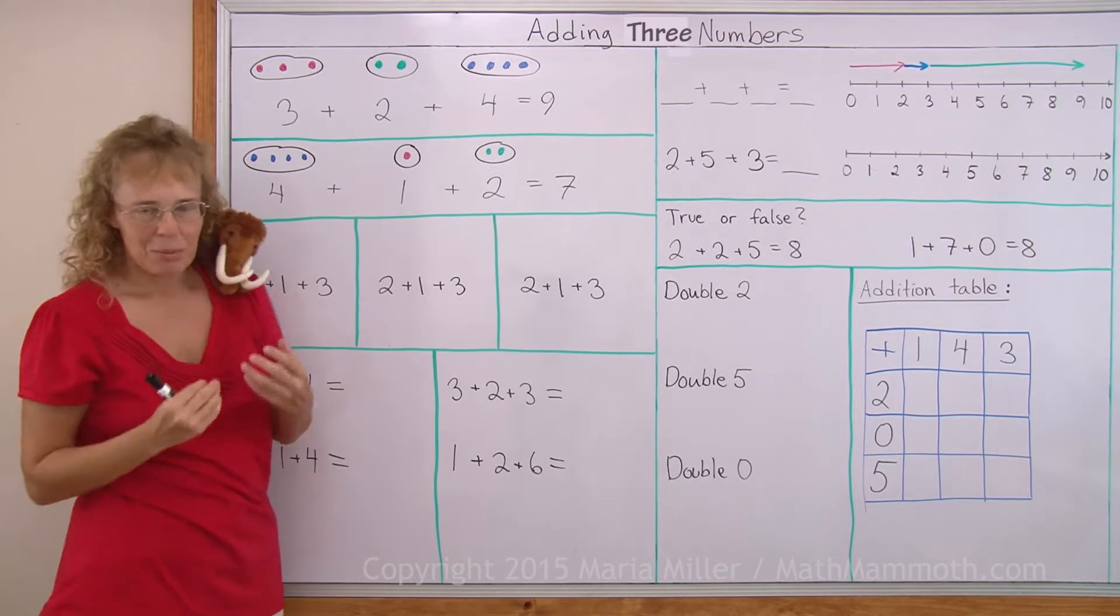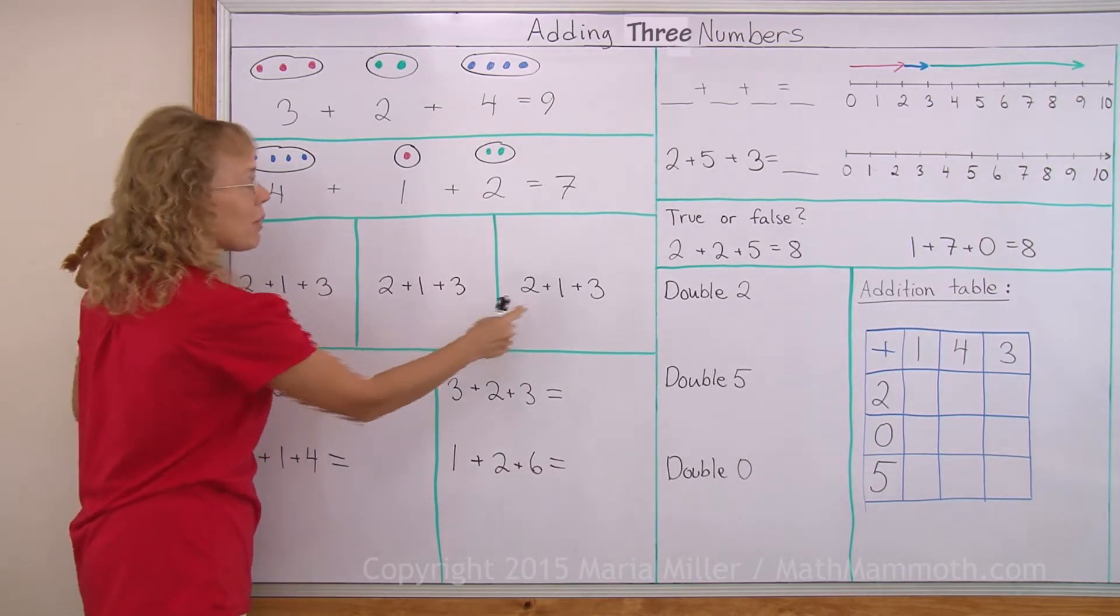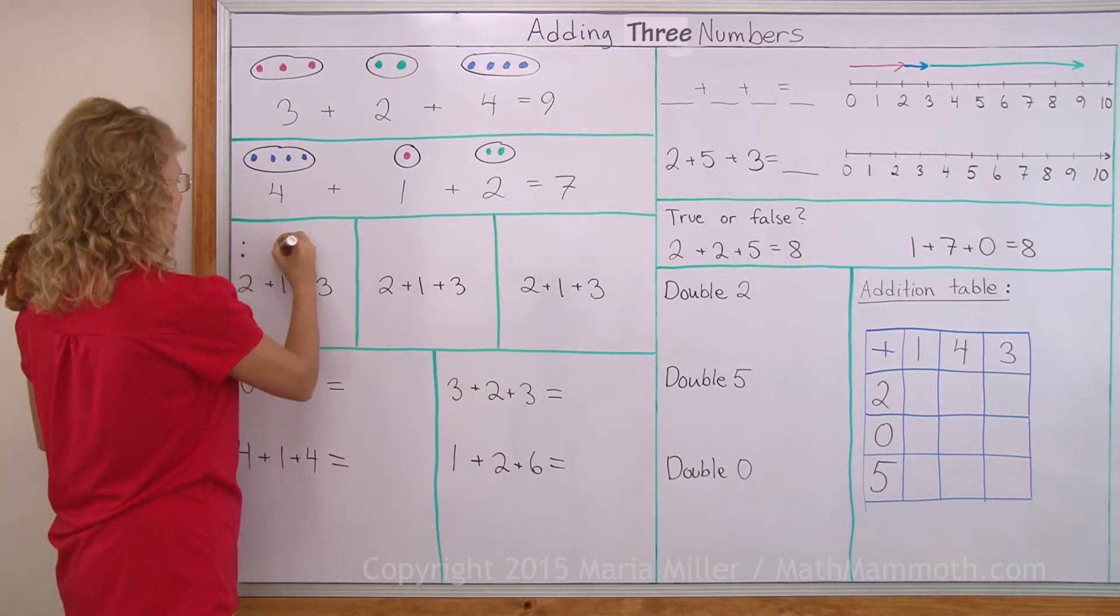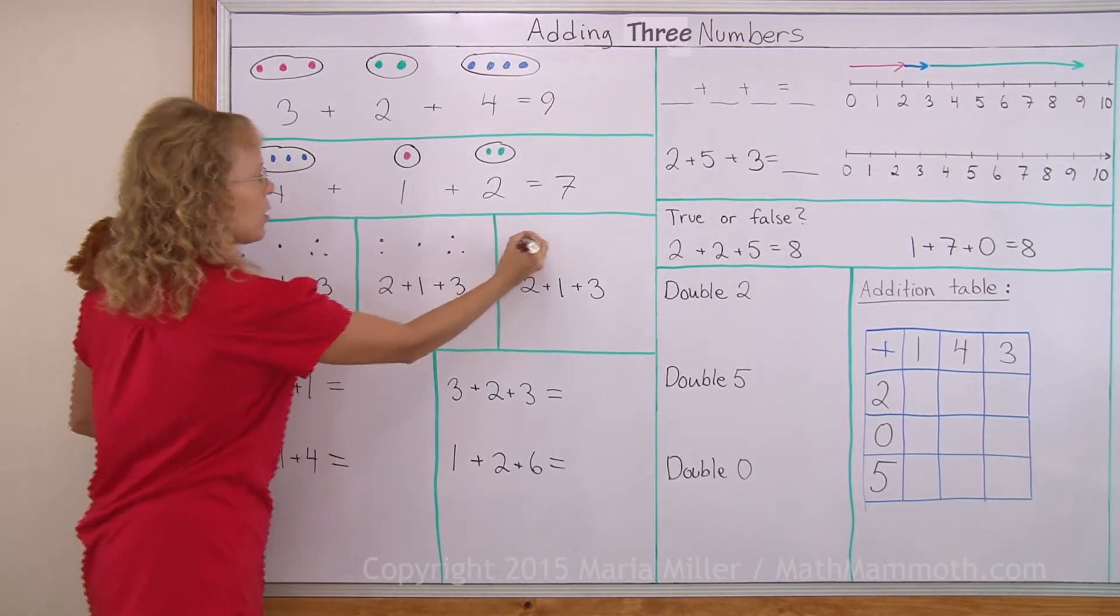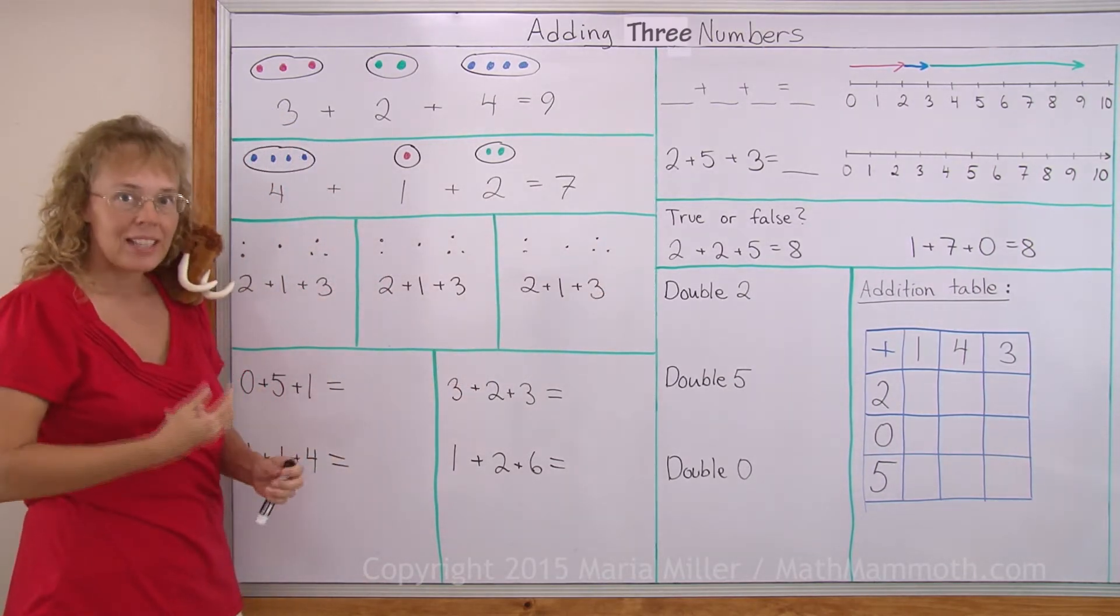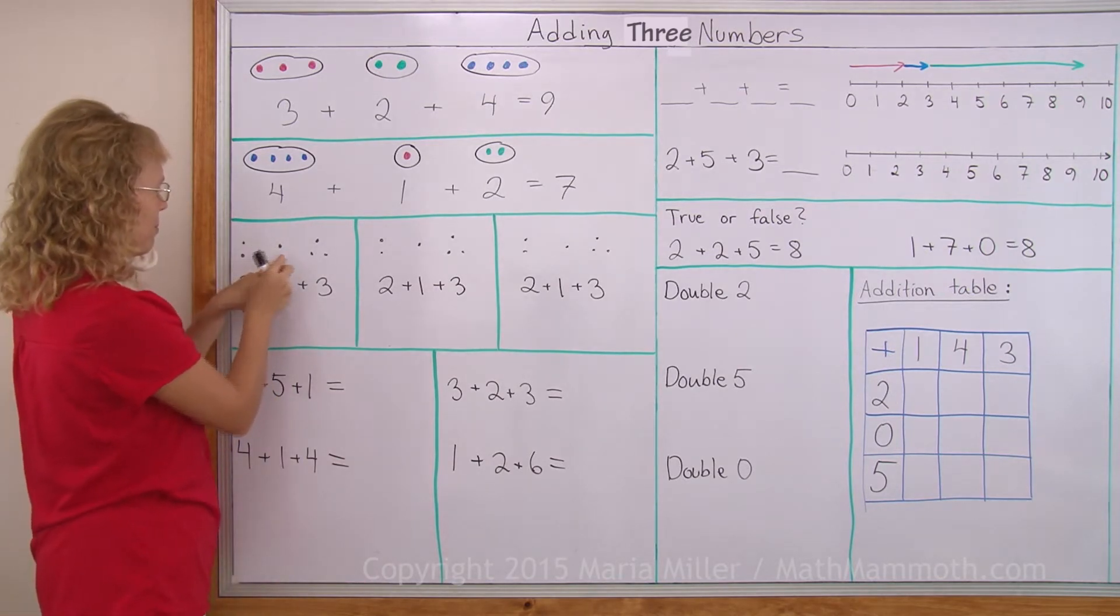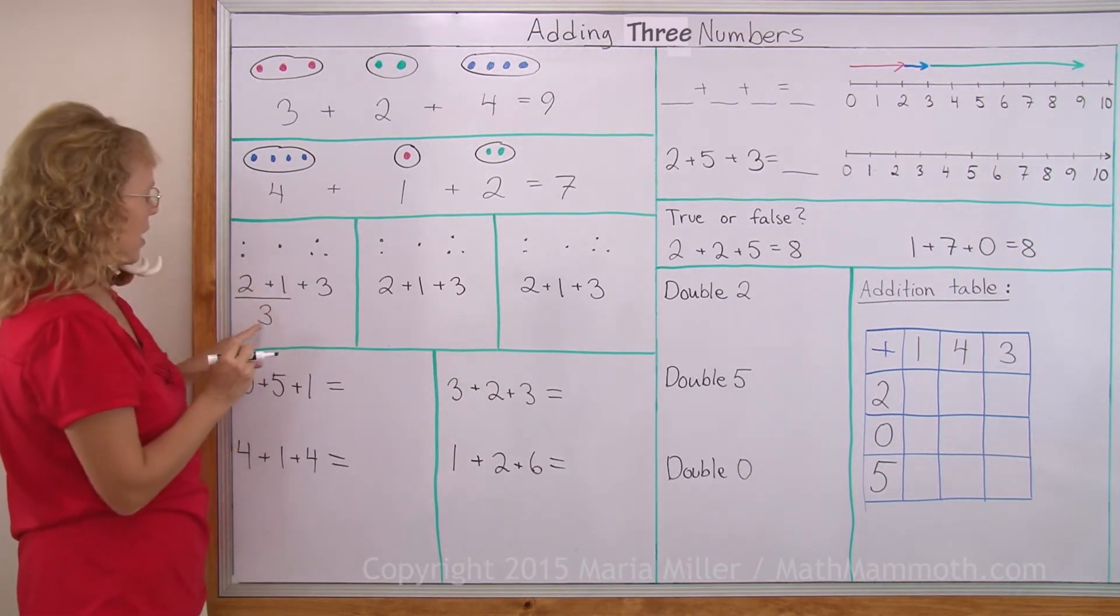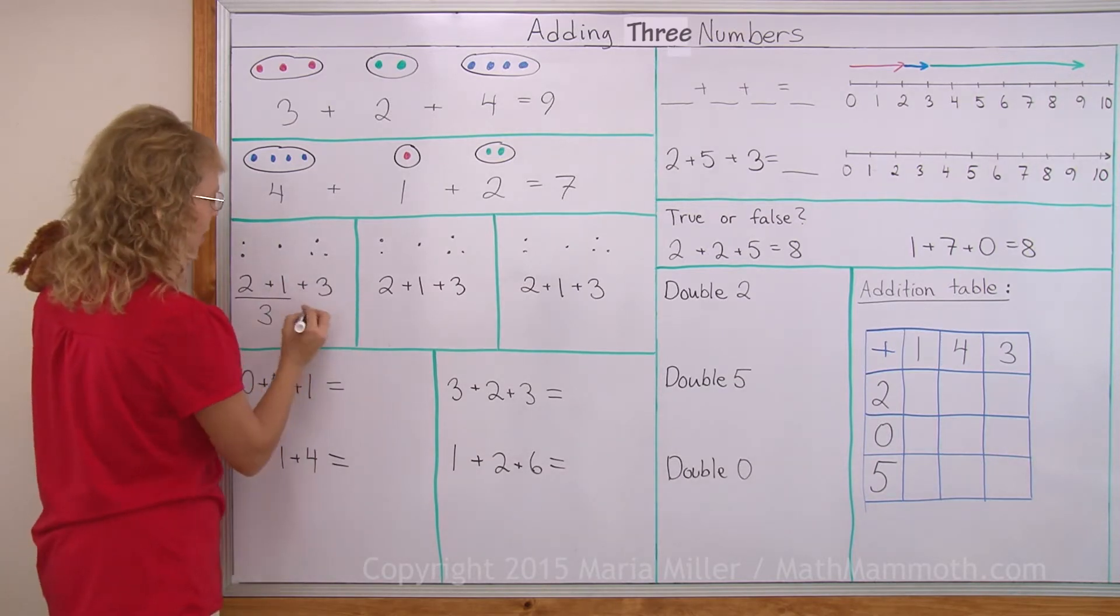Let's look at that principle, that idea in a little more detail. I have the same addition problem here three times. And I can draw some dots to help me add these. Two and one and three. Let's check what we get when we add in different orders. Let's say I first add this and this. One, two and three. So I get three. These make three. And then I add the three and that three. What's three and three? It is six. So I get six.